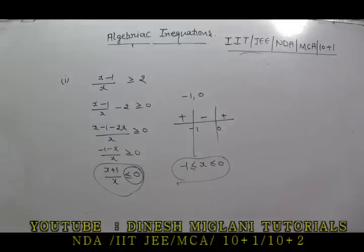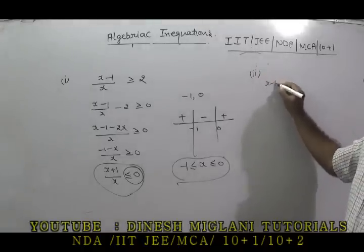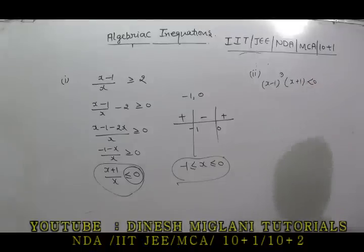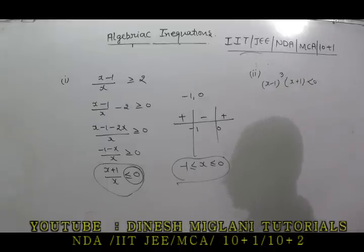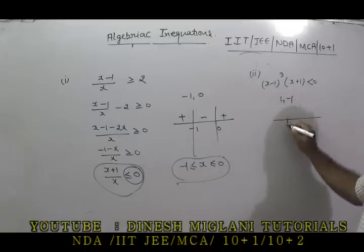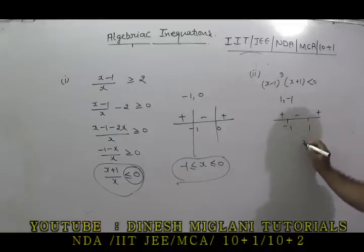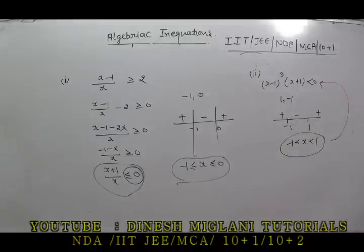One more question: (x−1)³(x+1) < 0. The power of (x−1) is odd (cube), so we treat it normally. Put both equal to 0: x = 1 and x = −1. Show on the number line: −1 and 1. Alternate signs: positive, negative, positive. We need less than 0 — the negative interval. Answer: x lies between −1 and 1.